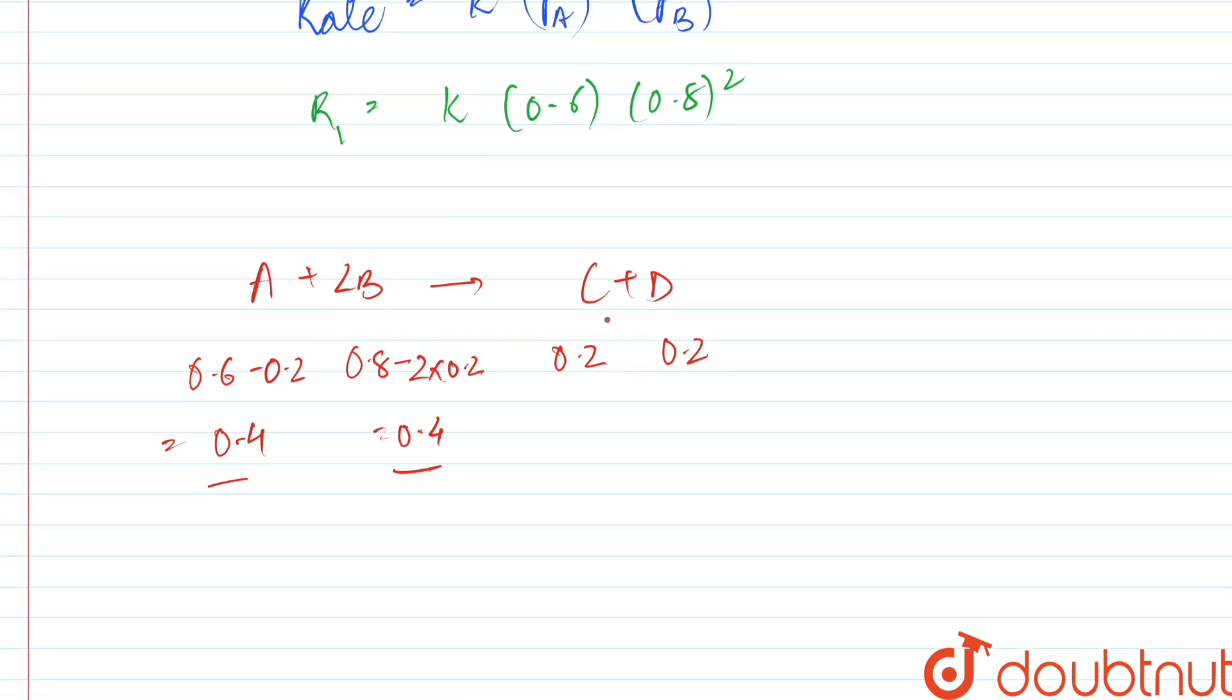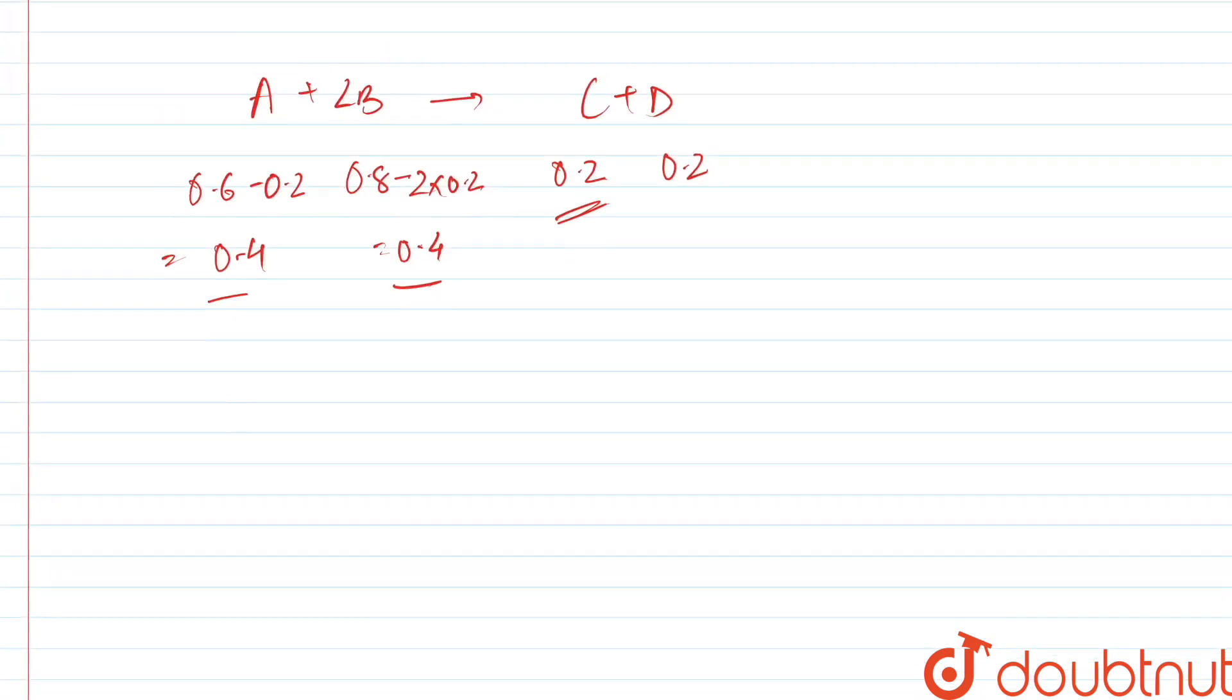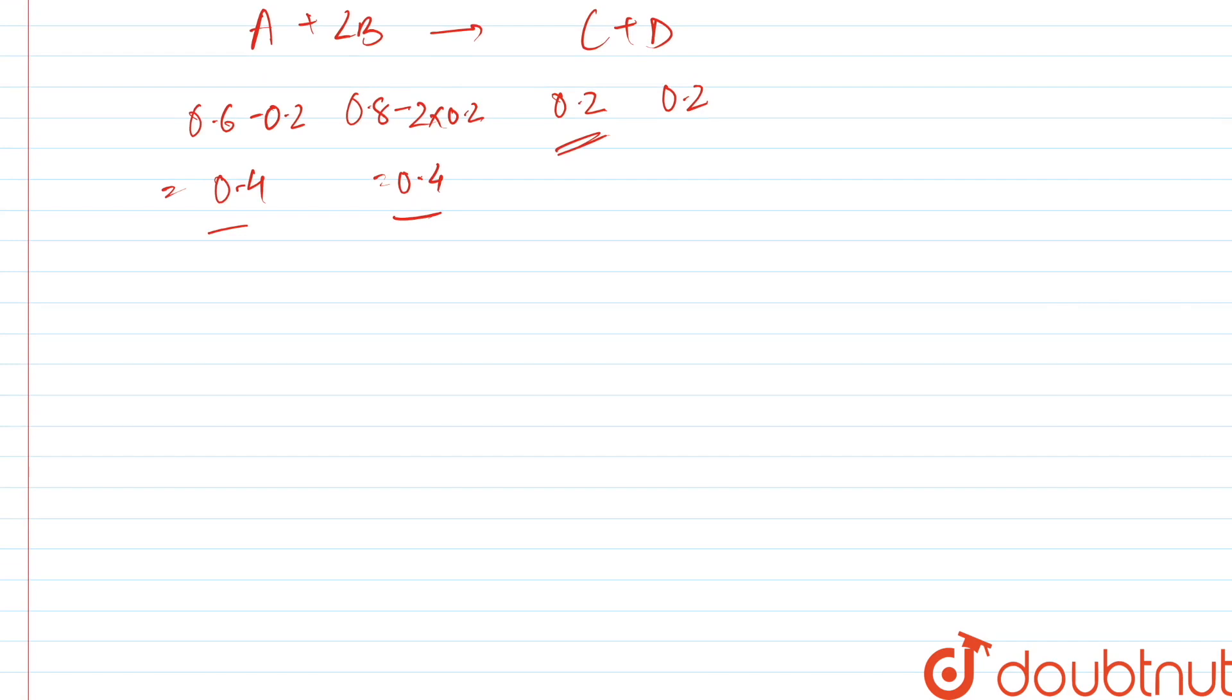the partial pressure of C is 0.2. So the rate of the reaction would then again be r2, that is the rate of reaction when C's partial pressure is 0.2, is k into partial pressure of A, that is 0.4 into